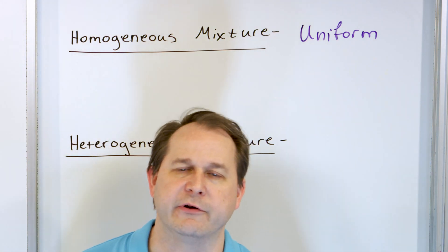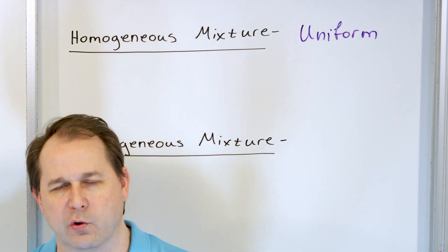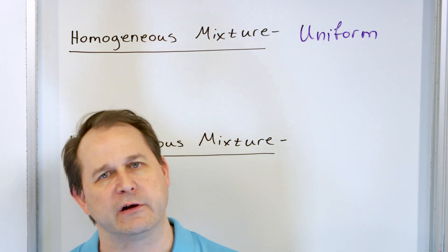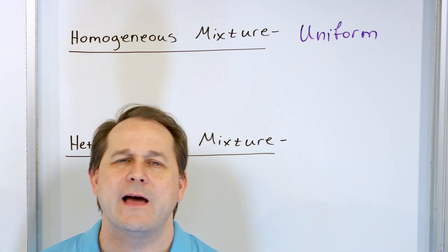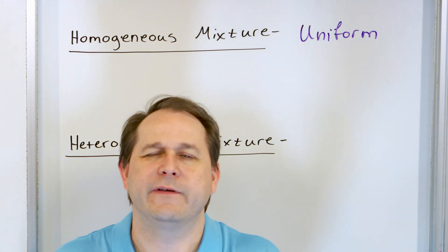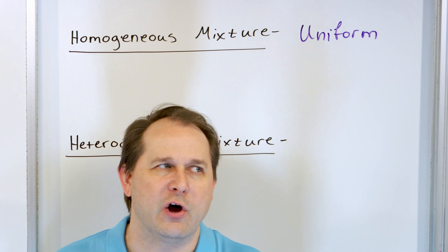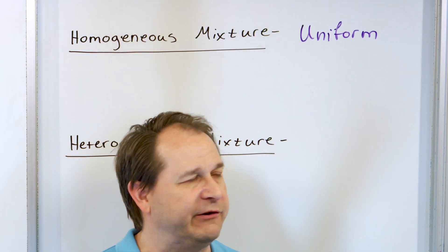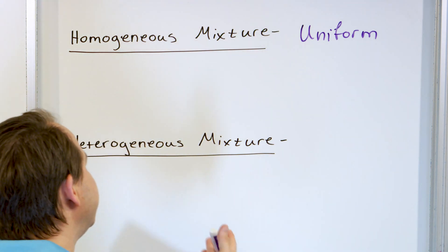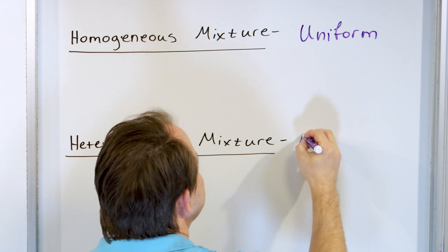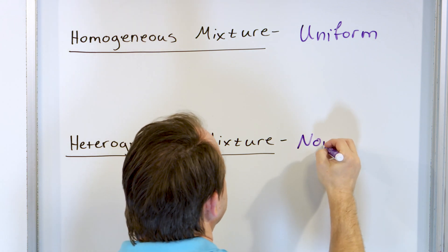A homogeneous mixture is a mixture of two or more substances that are uniform throughout in composition. Just know that the idea of a homogeneous mixture is a uniform mixture. So what do you think a heterogeneous mixture is? It's non-uniform.